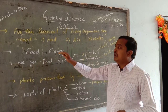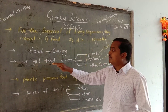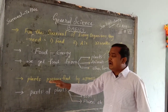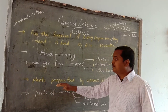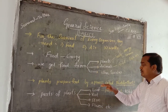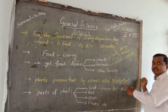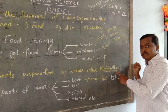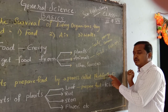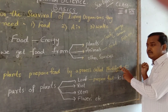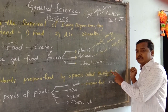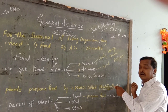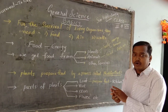So for energy we need to take food. We get food from plants, animals, and other sources. Plants prepare food by a process called photosynthesis. This photosynthesis topic you may have covered in 4th or 5th class — by taking sunlight energy and carbon dioxide they prepare food. You will learn it in detail in higher classes.